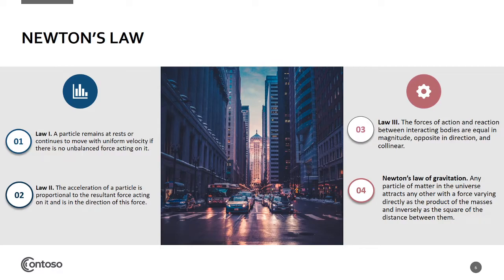Newton's Law of Gravitation states that any particle of matter in the universe attracts any other particle with a force varying directly as the product of the masses and inversely as the square of the distance between them. Newton discovered this relationship between the motion of the moon and the motion of a body falling freely on Earth. Through his dynamical and gravitational theories, he explained Kepler's laws and established modern gravitational science. The moon is held in orbit around the Earth due to the attraction force between them.